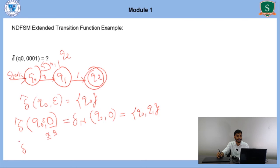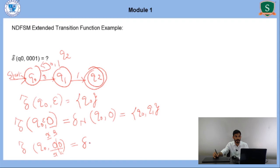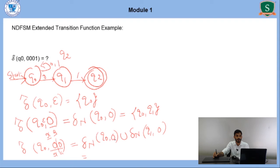Next, compute δ-cap(Q0, 00). Treat as X·a where X = 0. We already know δ-cap(Q0, 0) = {Q0, Q1}. So we compute δ(Q0, 0) union δ(Q1, 0). δ(Q0, 0) = {Q0, Q1}, and δ(Q1, 0) is null. Therefore δ-cap(Q0, 00) = {Q0, Q1}.